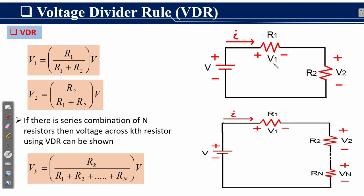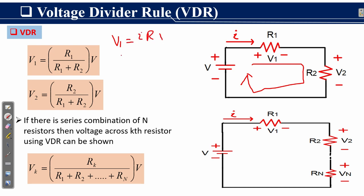If we want to find V1 or V2, we need to find the loop current I using Kirchhoff's Voltage Law. Once we know the current I, then according to Ohm's Law, V1 equals I times R1 and V2 equals I times R2.